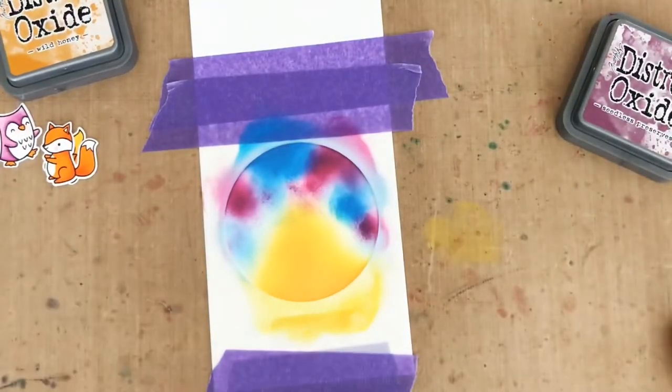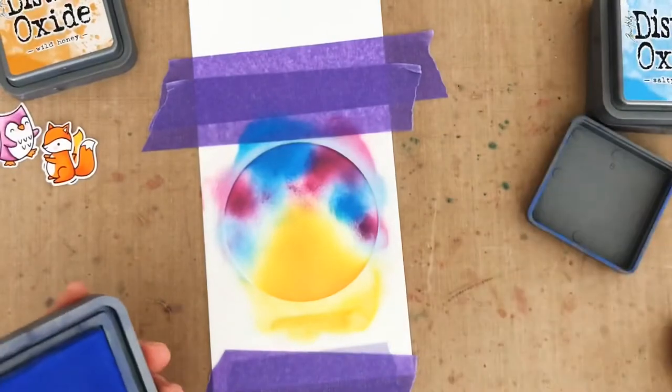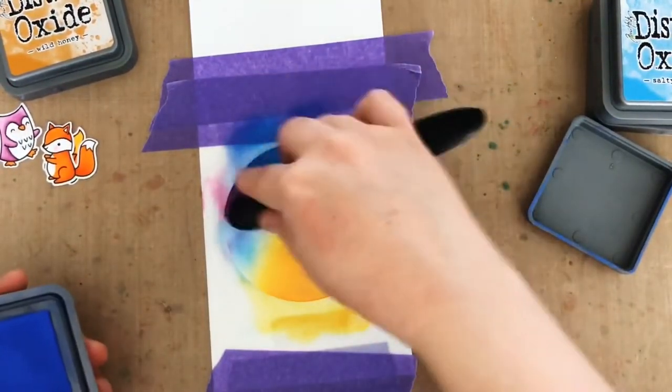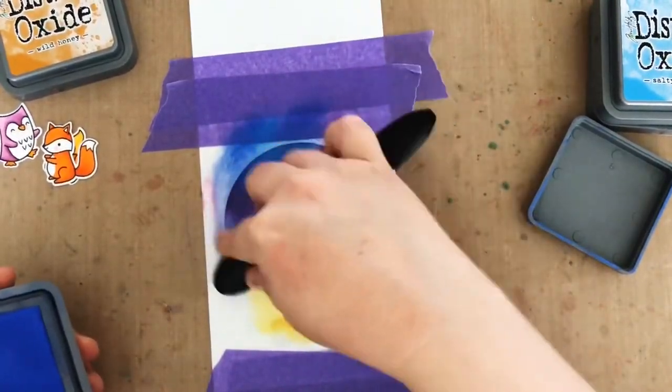To finish my little night sky, I'm going to apply my darkest blue, which is the Distress Oxide Blueprint Sketch. And I'm just going to go over all of those colors, and then blend carefully around my firelight glow.